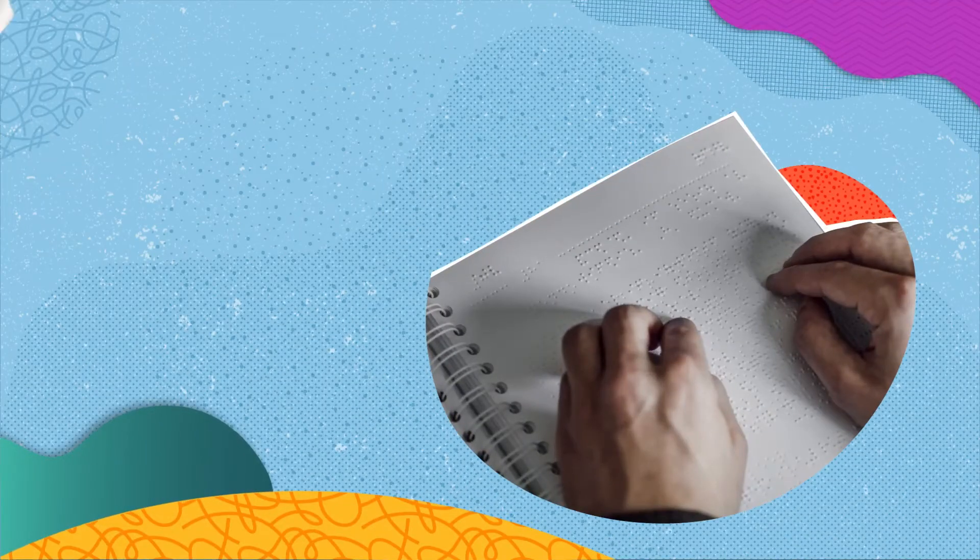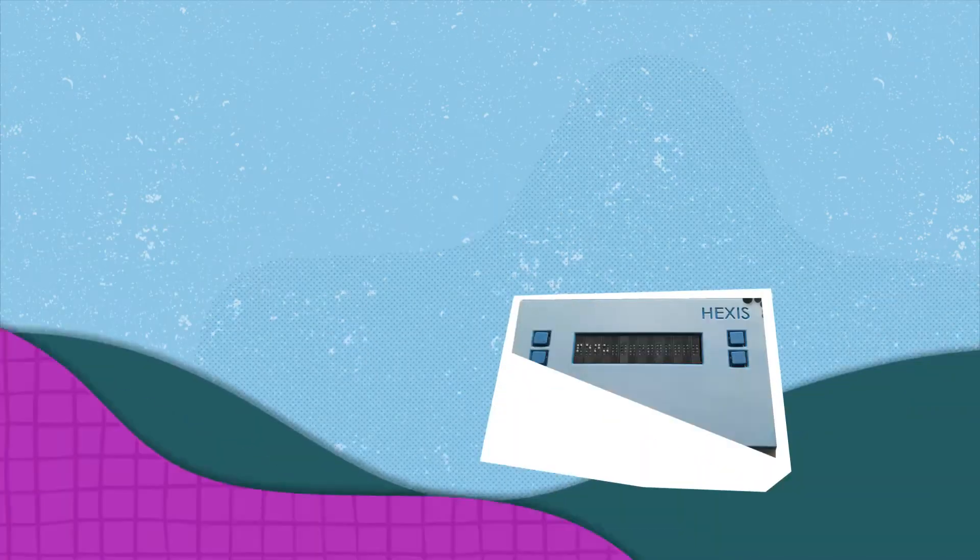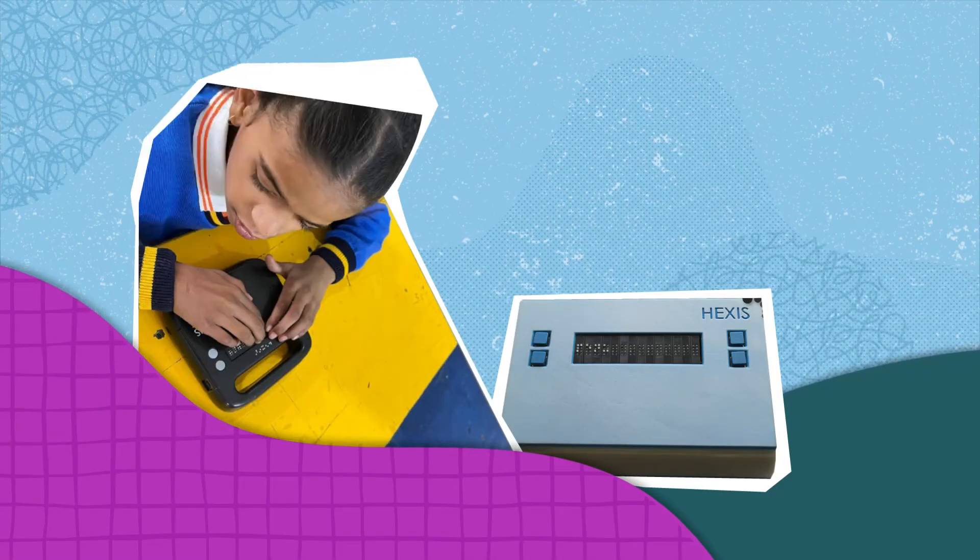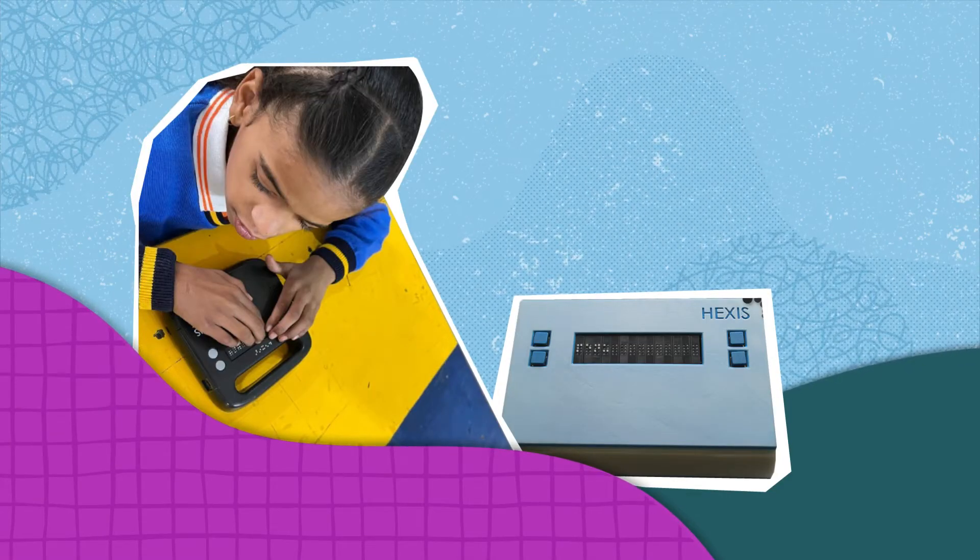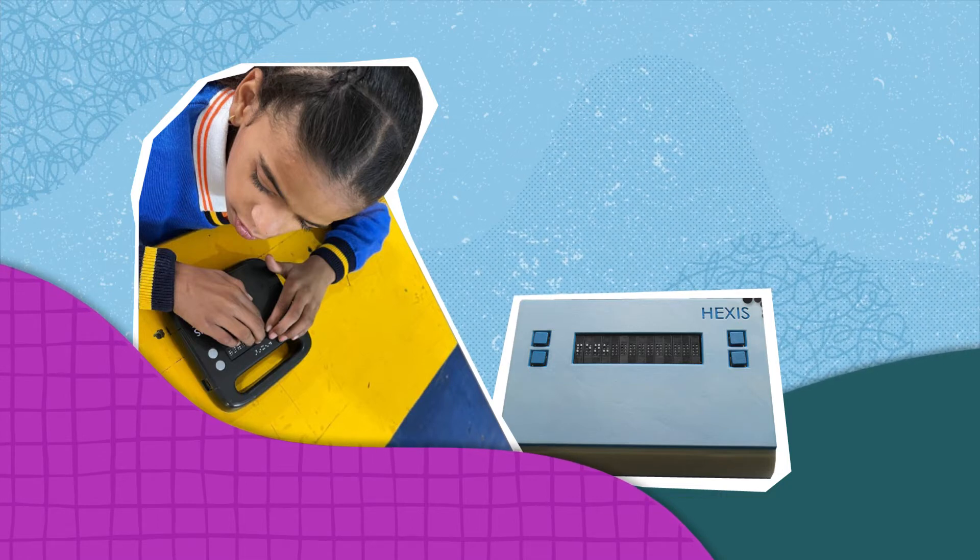Let's look at a few examples. The Hexis Antera project in India is enhancing braille literacy. It involves a device which converts content into braille on demand, making educational content more accessible to learners who are blind or have low vision.